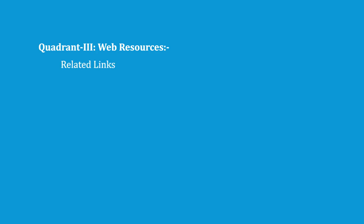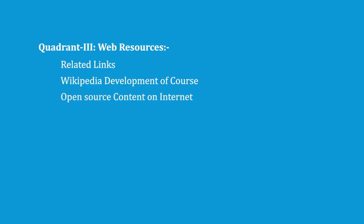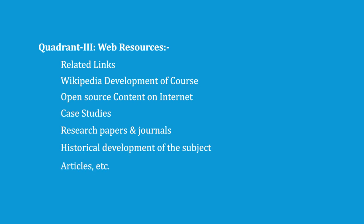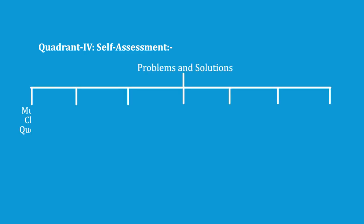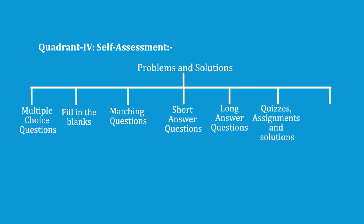Quadrant 3 is web resources, which shall contain relevant links, Wikipedia, development of course, open source content on the internet, case studies, research papers and journals, historical development of the subject, articles, etc. Quadrant 4 is self-assessment, which shall contain problems and solutions which could be in the form of MCQ, fill in the blanks, matching questions, short answer questions, long answer questions, quizzes, assignments and solutions, discussion forum topics and setting up of FAQs.